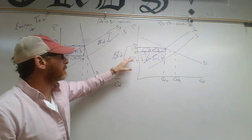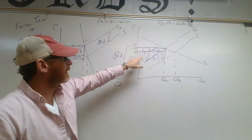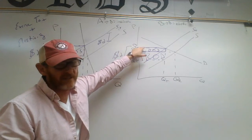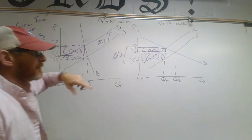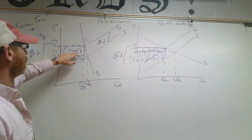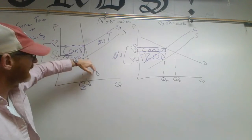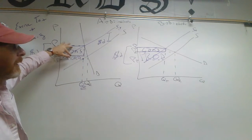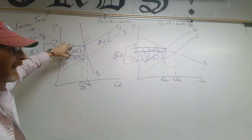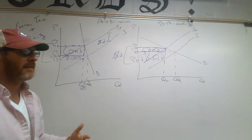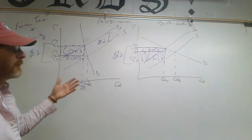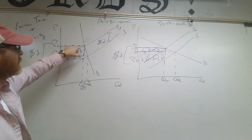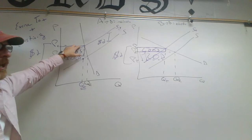The producer is taking on, say, $1.50 and the consumer is taking on $0.50 of this tax on the elastic good. Over here on the inelastic good, it's the opposite — the consumer is taking on more of the tax and the producer is taking on less of it. So the producer is taking on only $0.50, but the consumer is taking on $1.50.